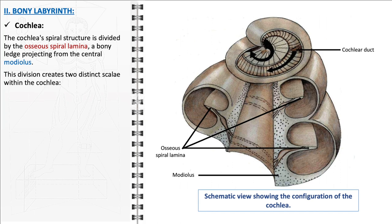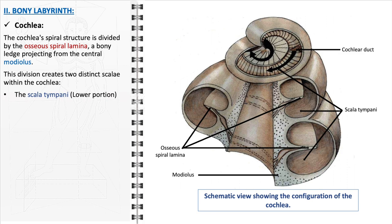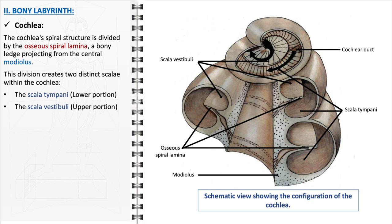The division created by the osseous spiral lamina results in the formation of two distinct scalae within the cochlea: the scala tympani and the scala vestibuli. The scala tympani, located in the lower portion of the cochlea, extends from the round window at the base to the helicotrema at the apex, where it connects with the scala vestibuli, and is filled with perilymph. The scala vestibuli, situated in the upper portion, runs from the oval window to the helicotrema and is also filled with perilymph. Between these two scalae lies the scala media or cochlear duct, a separate chamber that houses the organ of Corti, the actual sensory organ of hearing.